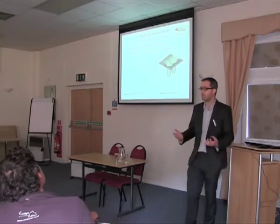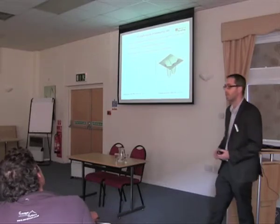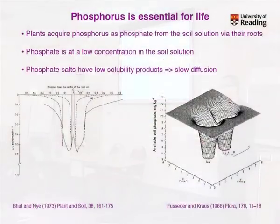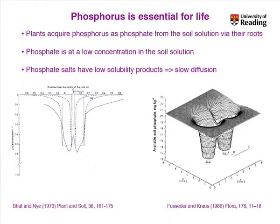I'll start with phosphorus. Phosphorus is essential to life — it's part of the DNA backbone, phospholipids, and ATP. Plants acquire their phosphorus in the form of phosphate from the soil solution. One of the problems is that phosphorus in the soil forms very strong bonds with other elements, so when plants remove the phosphate from the soil solution, in many soils it takes a long time for that phosphate to dissolve back into the soil solution and replenish it.